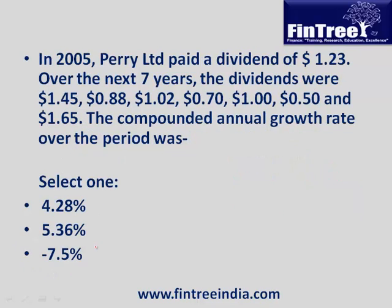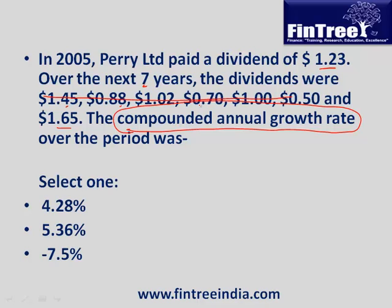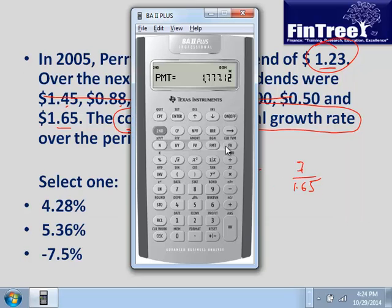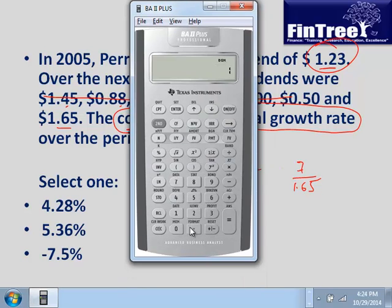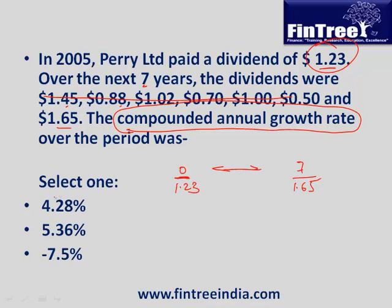In 2005, Peri Limited paid a dividend of $1.23. Over the next seven years the dividends changed, ending at $1.65. What is the compounded annual growth rate for this period? To calculate CAGR, we only need the starting and ending values: PV is negative 1.23, FV is 1.65, N is 7, compute IY — the compounded annual growth rate is 4.28%.